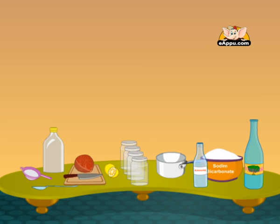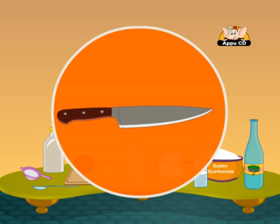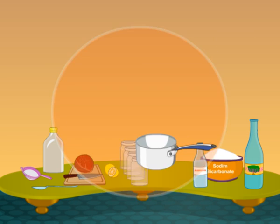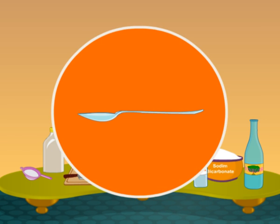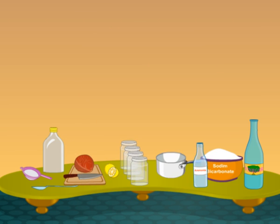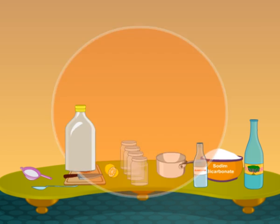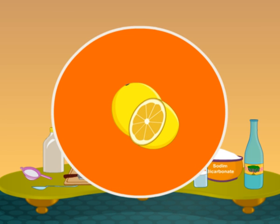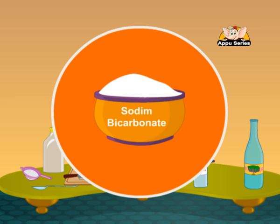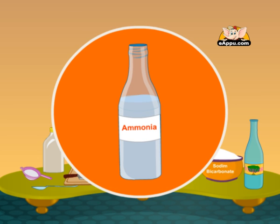You will need: a sieve, red cabbage, a knife, a chopping board, a saucepan, a spoon, four small jars, distilled or purified water, lemon juice, vinegar, sodium bicarbonate (also known as baking soda), and ammonia.